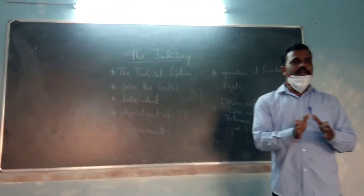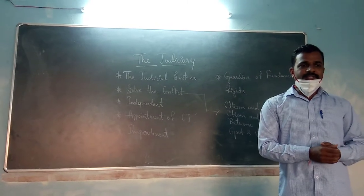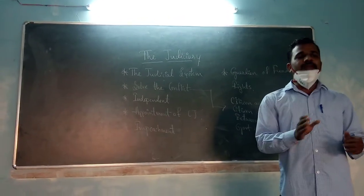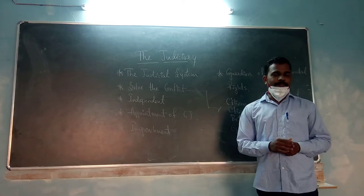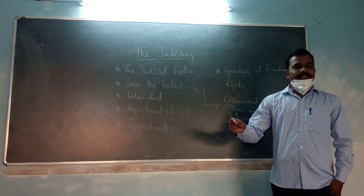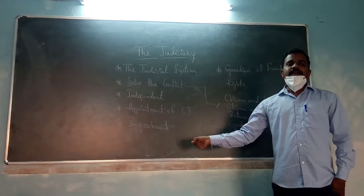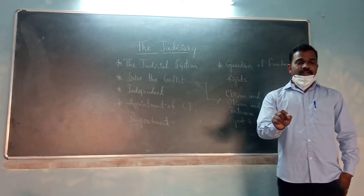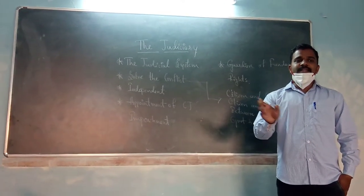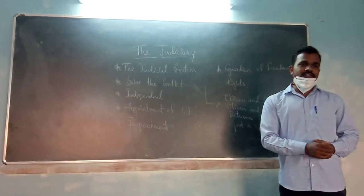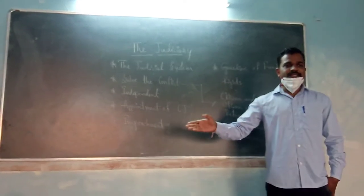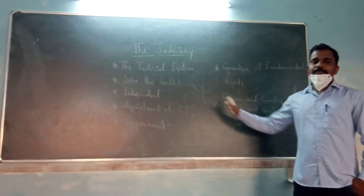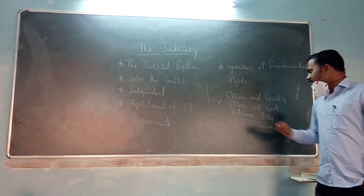For example, nowadays we are facing some problems related to our boundary. For example, Karnataka and Maharashtra — the Belgavi issue. It is in Karnataka, but the Maharashtra people and their CM are telling that it is a part of Maharashtra. So these types of disputes arise, and they can be solved by the Supreme Court.